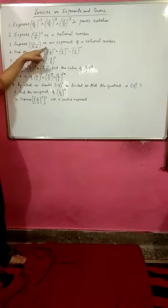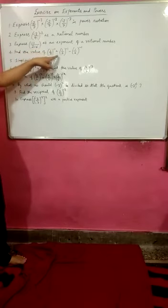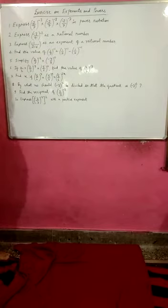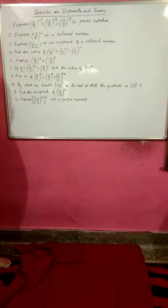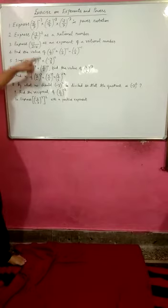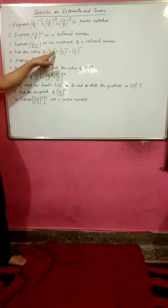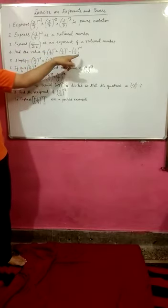Next question: find the value of (1/3)^-1 + (1/5)^-1 - (1/6)^-1. Whenever any rational number has a negative power, to make that power positive, we always do the reciprocal of the same rational number. So here, the reciprocal of 1/3 becomes 3/1, which means 3, and the same negative power will become positive. Solve the complete question in a similar way.